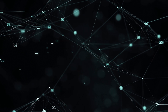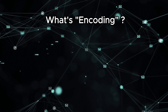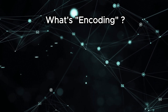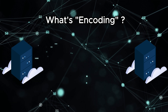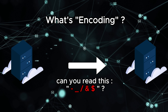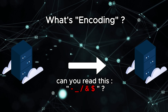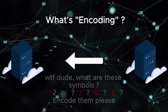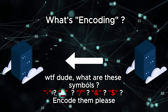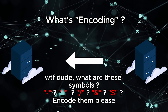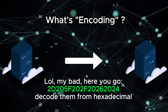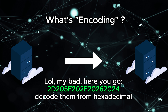Let's start by understanding what encoding is. Encoding in web applications is like putting information into a format that can be easily understood and processed by different parts of a system. It's not about making data secret, but more like ensuring everyone speaks the same language. It's not a security measure — it's a tool for compatibility.